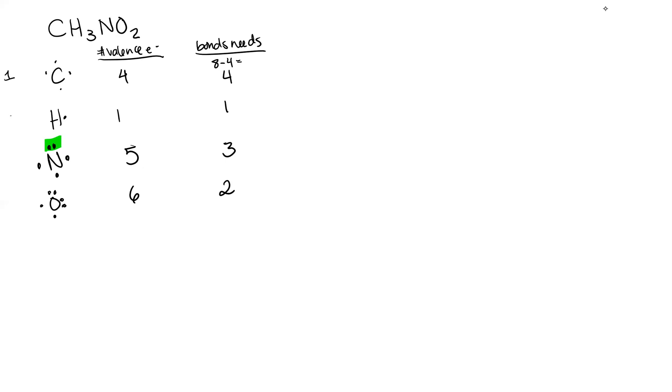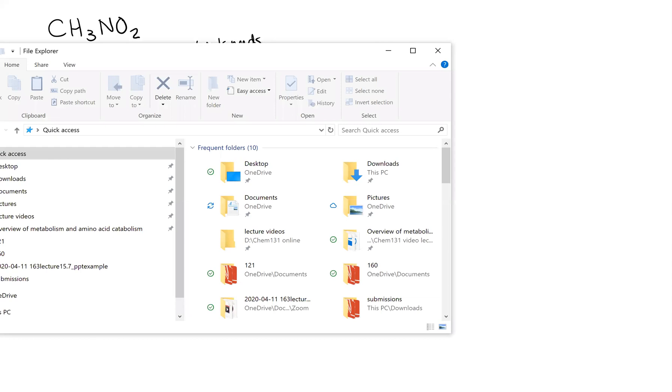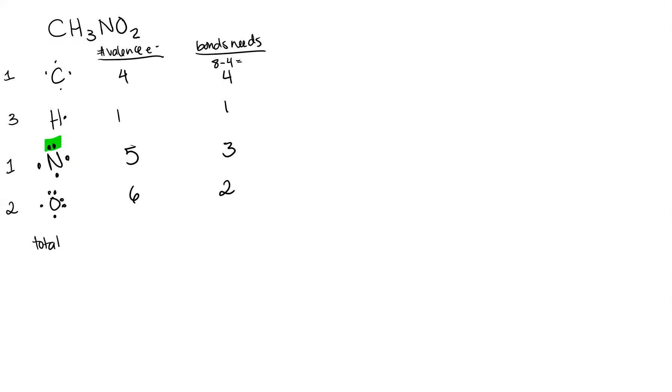Now I've got one carbon, I've got three hydrogen, I've got one nitrogen and two oxygen. My total valence electrons: for the carbon, it's going to be four plus three hydrogens each with one, plus one nitrogen with five, and plus two oxygen each with six. So that's going to be 24 electrons. So I can use that at the end of my structure to double check myself and make sure I haven't accidentally added an electron or removed one.